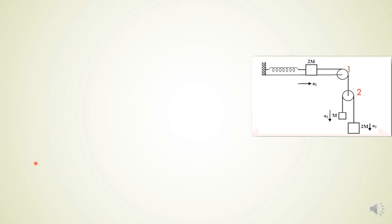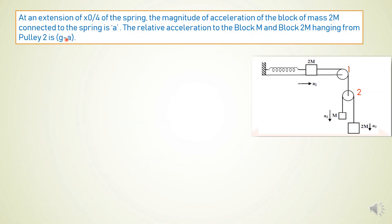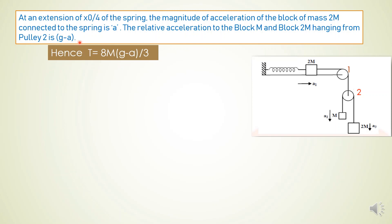At an extension of x0/4 of the spring, the magnitude of acceleration of the block of mass 2m connected to the spring is a. The relative acceleration of blocks m and 2m hanging from pulley 2 is g minus a. Using our previous expression for the tension T, we can conclude that T equals 8m(g minus a) by 3.